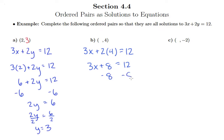Subtract 8 from both sides. 3x equals 4. And then divide both sides by 3. We end up with x equals 4 thirds. And so we know that the completed ordered pair that would be a solution to the equation 3x plus 2y equals 12